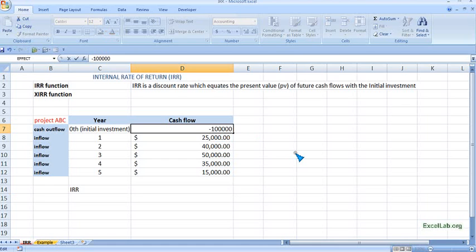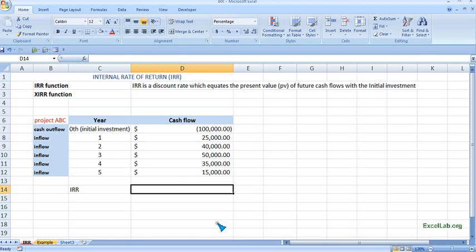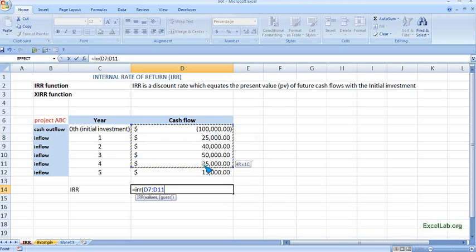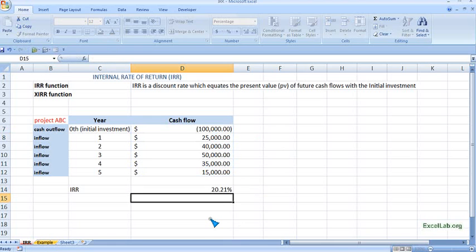So that Excel can differentiate what is outflow and inflow. Now we can see the parenthesis. Begin with equals, write IRR, and give the range. This is our range of cash flows. Close it, and we can have it: 20.21%. This is the IRR from the following project.